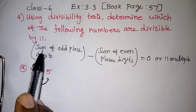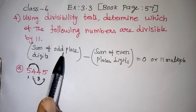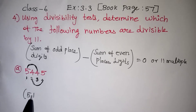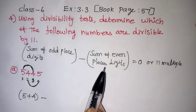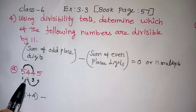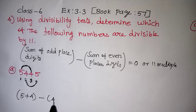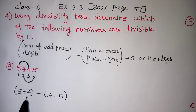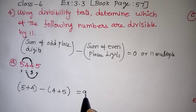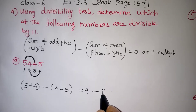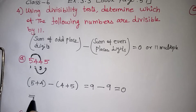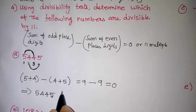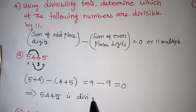So first I am going to add the digits coming in odd places. What are the numbers I have in odd places? 5 and 4. So, 5 plus 4, minus the sum of digits at even places — which are 4 and 5 — so 4 plus 5. That gives 9 minus 9, which is 0. So 5445 is divisible by 11.